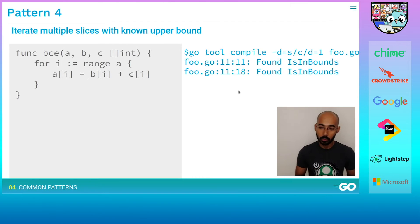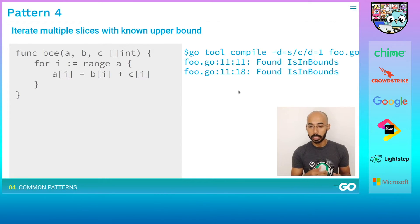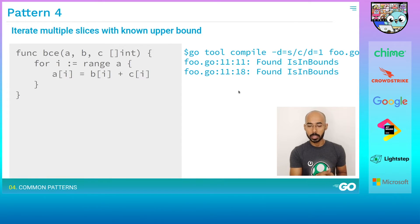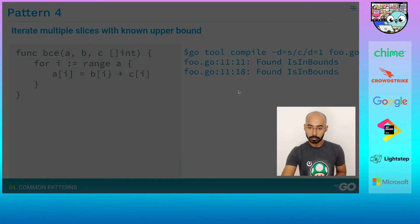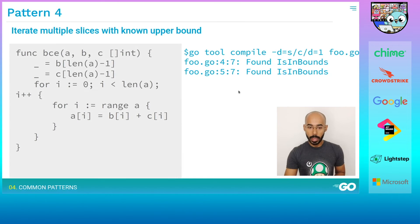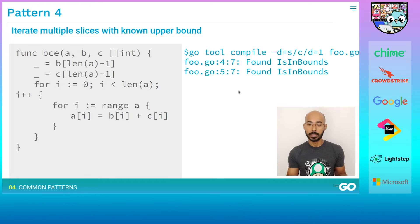Here's another pattern where we iterate multiple slices with a known upper bound. We are iterating the slice a, so there's no bounds check on a. But there are bounds checks on b and c. Similar to before, we move the checks outside the loop by accessing the upper bound of a for both b and c.